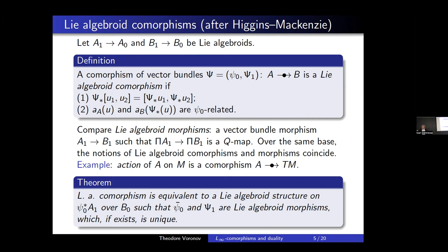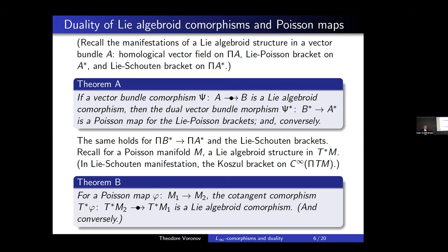Comorphisms are also important because actions can be described in terms of them. An action of a Lie algebroid on something is a comorphism into the tangent algebroid, since to a section corresponds a vector field which is the infinitesimal generator of the action.